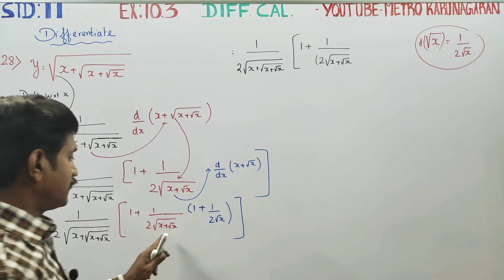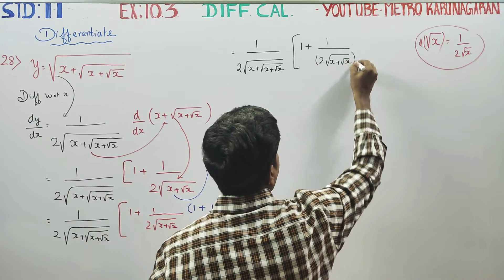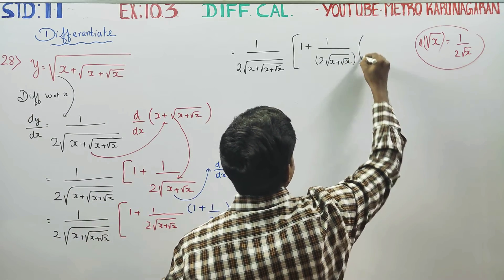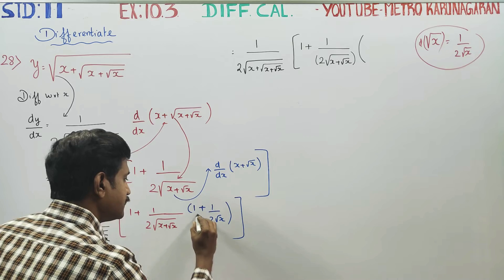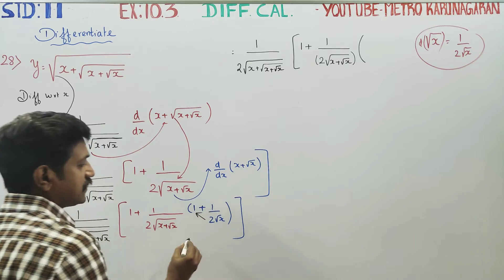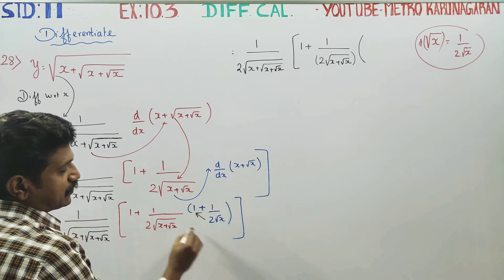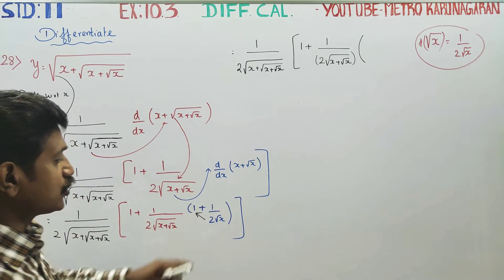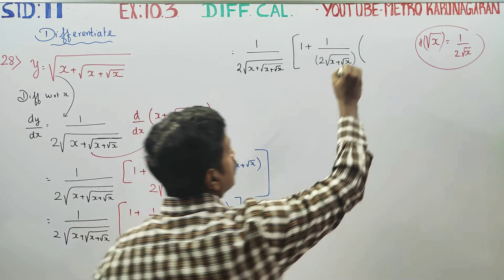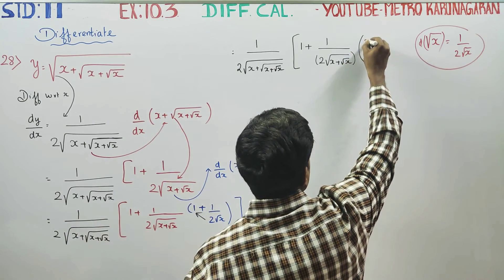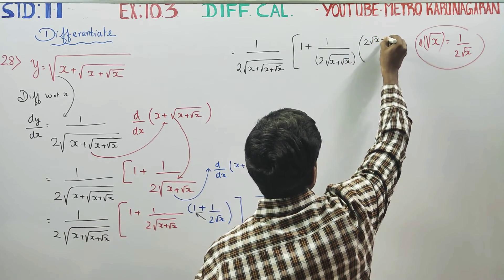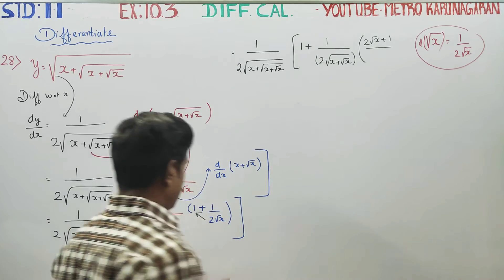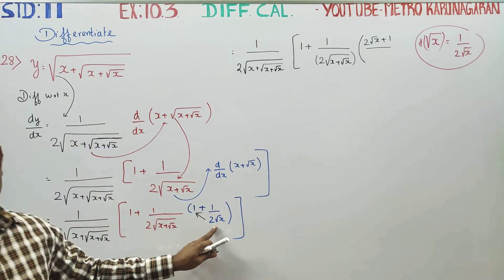2 times root of x plus root x — this is the whole bracket. Now take LCM, then cross multiply: 2 root x plus 1 by 2 root x.